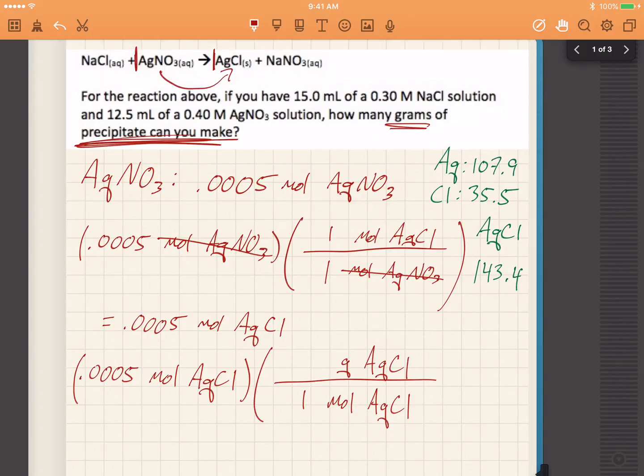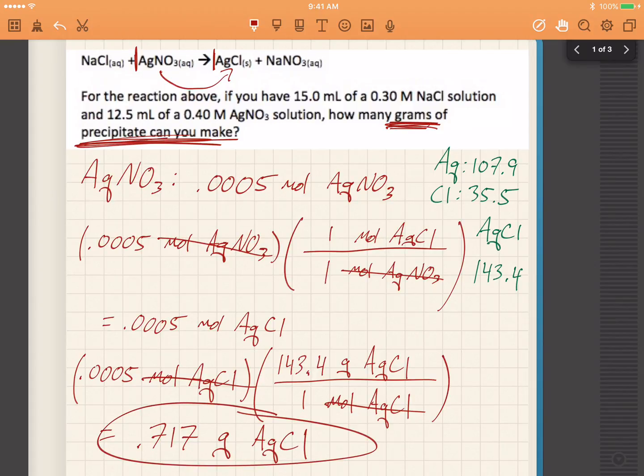So switch back to red, and 143.4 grams of AgCl is equal to 1 mole of AgCl. So these go away, and now it's multiplication. 0.0005 times 143.4, which is 0.717 grams of AgCl. And we're done. We found out how many grams of precipitate.